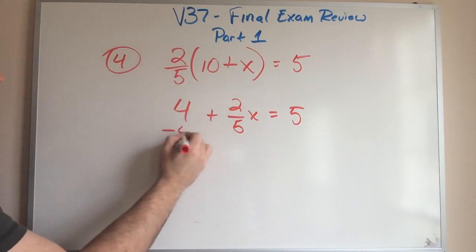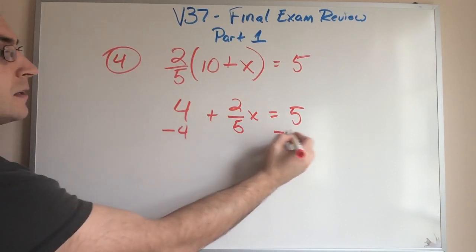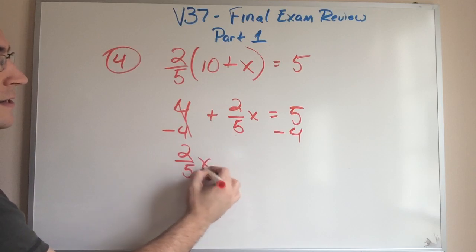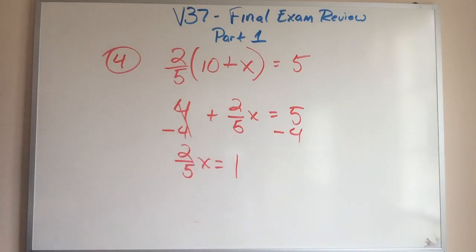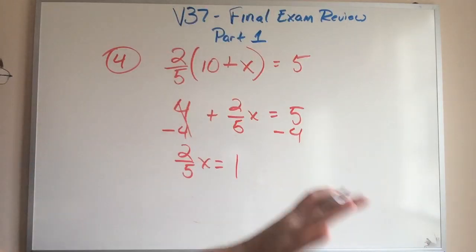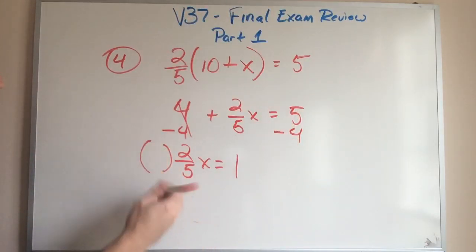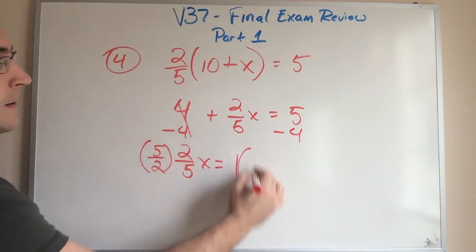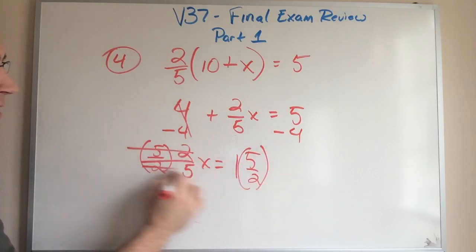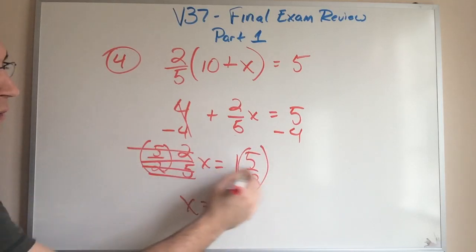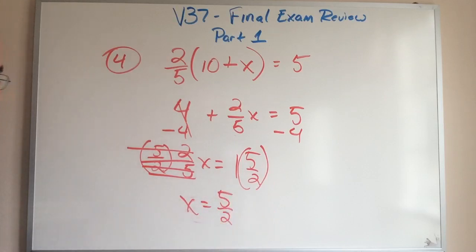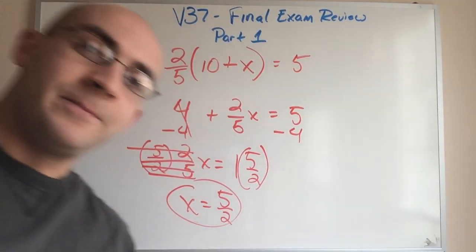Remember this together means multiplication. So I'm going to divide or multiply by the reciprocal on both sides. The reciprocal of two fifths is five over two or five halves. This cancels everything out. X is going to equal one times five over two or just simply five over two. That's my answer. I'm awesome. Get out of the way.